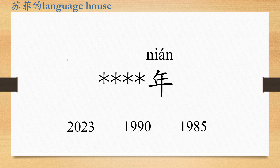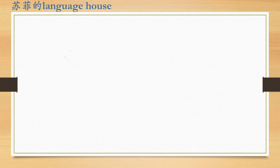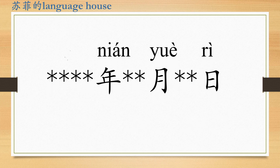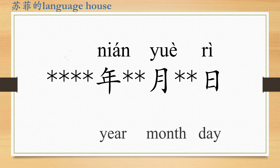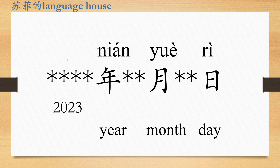Yijiu ba wu nian. And if we want to express year, month, day, we could say nian, yue, ri. For example, now it's 2023, July 18th. We could say erling er san nian, qi yue, shi ba ri.